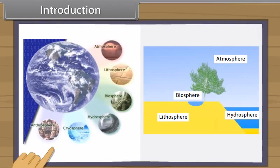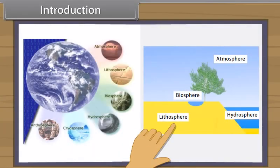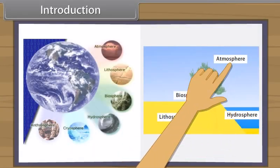Natural resources are components of atmosphere, hydrosphere and lithosphere. The physical part of biosphere is divided into three main groups: lithosphere, hydrosphere, atmosphere.